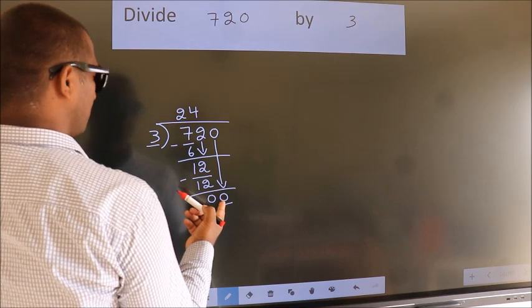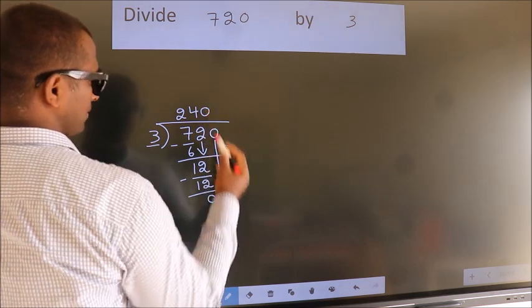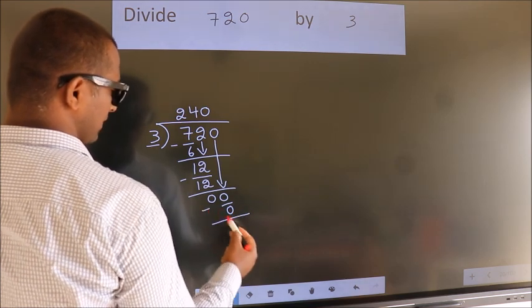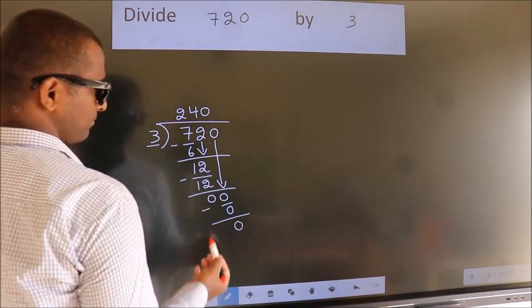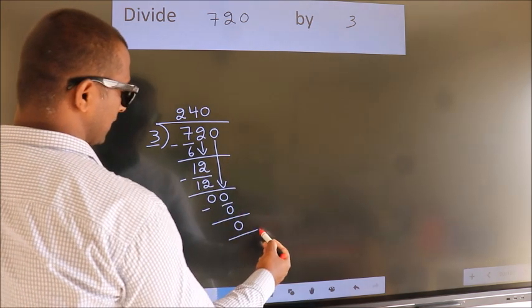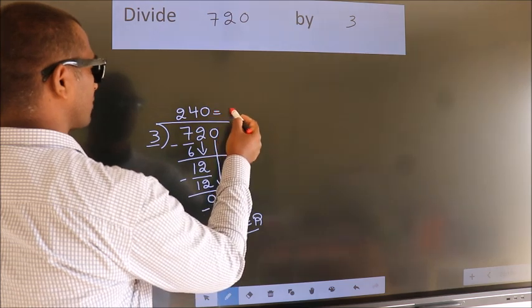When do we get 0? In 3 table, 3 times 0, 0. Now, we subtract. We get 0. No more numbers to bring it down. So, we stop here. This is our remainder. This is our quotient.